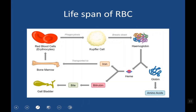The average lifespan of RBC is about 120 days. After that, RBCs are destroyed in the reticuloendothelial system in the spleen and liver by macrophages. The hemoglobin inside the RBC is split into globin — a protein used by the body — and heme. Heme is then split into iron, which is reutilized in erythropoiesis to produce RBCs, and bilirubin, a side product secreted by the gallbladder with the bile.